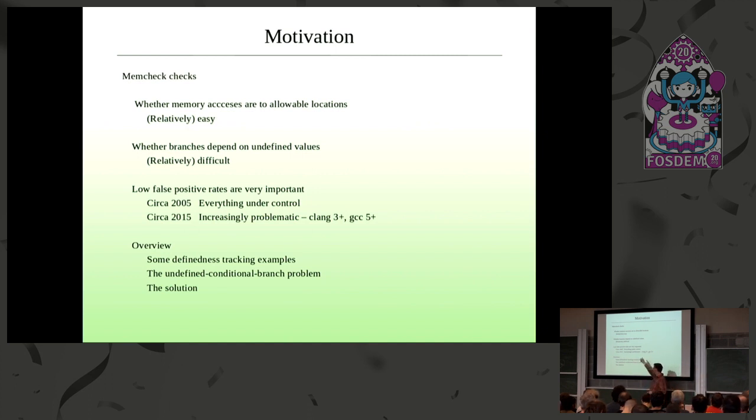So 2005, 15 years ago, everything was under control with the false positives, no problem there. Ten years later, we have these compilers, Clang, GCC, and probably the Intel compiler and everybody else being much more aggressive about optimizing. And there was an increasing number of false positive undefined value checks being reported. So we had to come up with a bunch of tricks or techniques to deal with these.